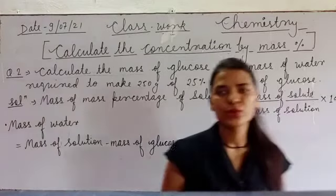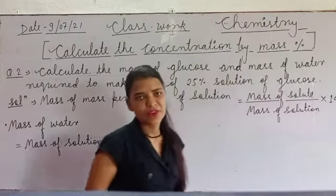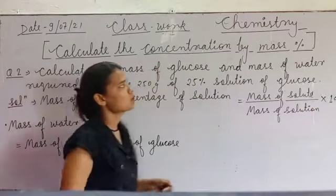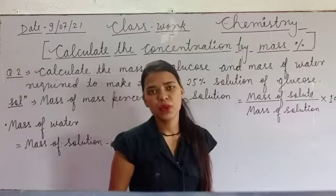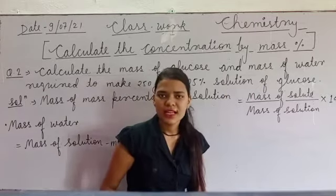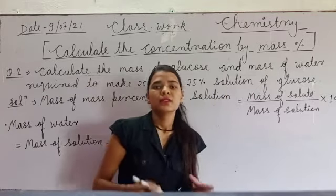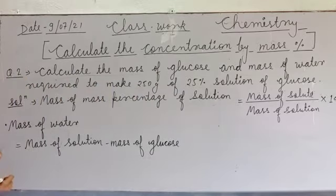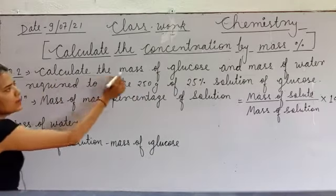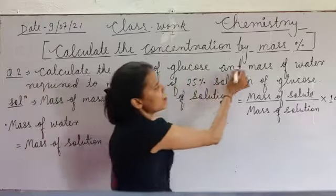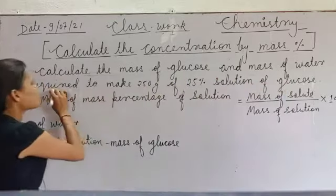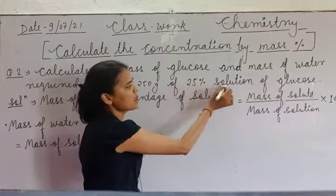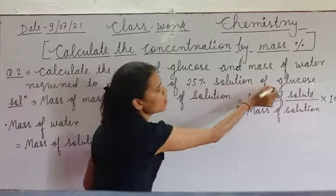Good morning class 9th. As you know, nowadays we are doing how to calculate the concentration of a solution by mass percent. In the previous lecture we did one numerical related to the topic, and today we are going to do the next one: calculate the mass of glucose and mass of water required to make 250 grams of 25 percent solution of glucose.